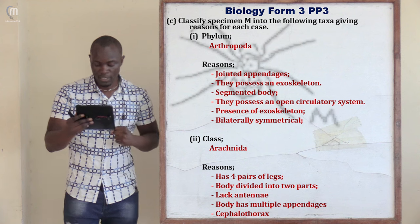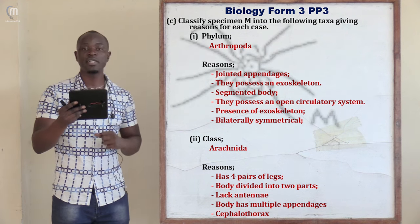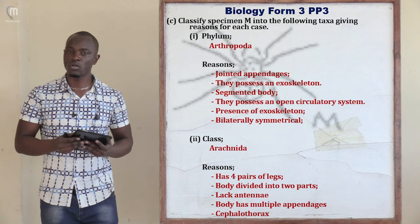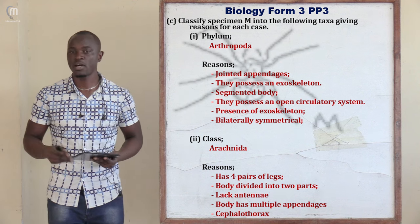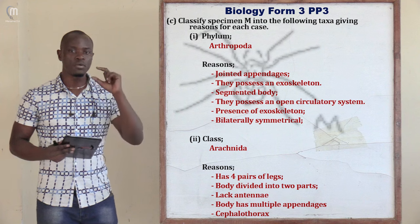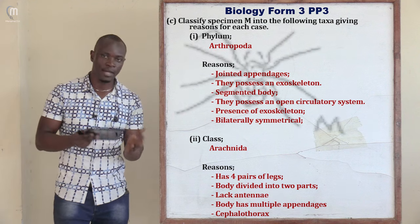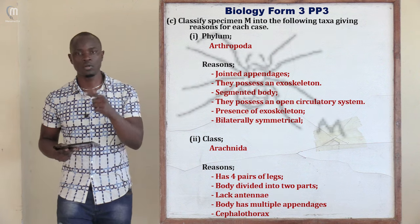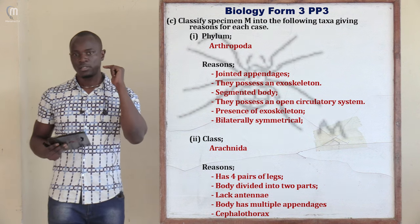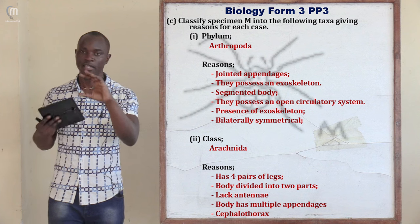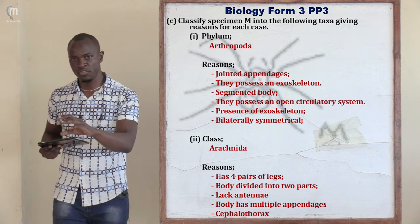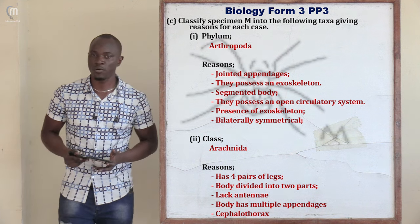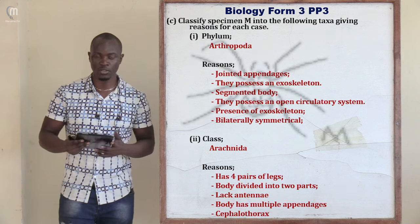Question C asks to classify specimen M into the following taxa with reasons. Taxa comes from taxonomic units — the hierarchy includes kingdom, phylum, division, class, order, family, genus, and species. A single level is called a taxon; two or more levels are called taxa. Taxon and taxa both come from taxonomy, the science of classification.